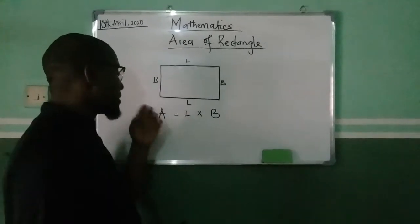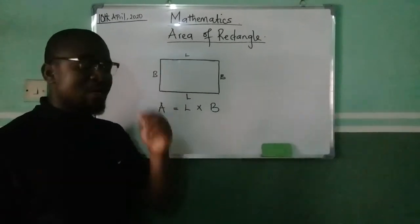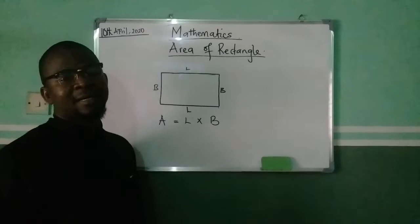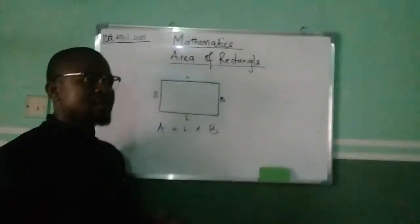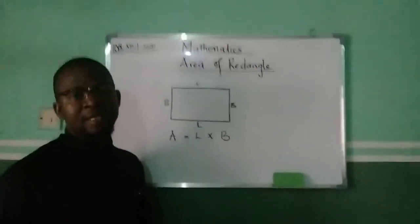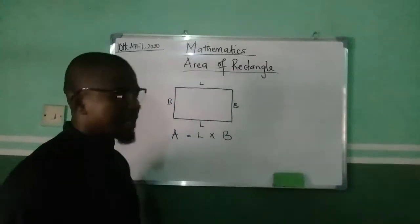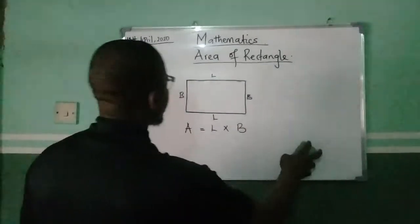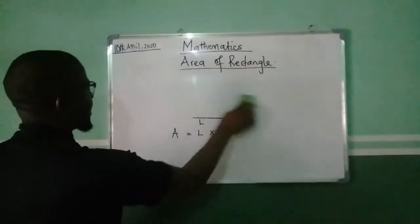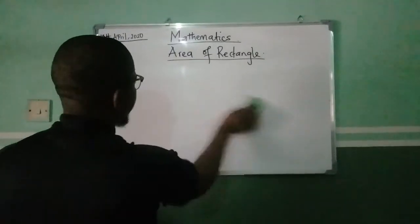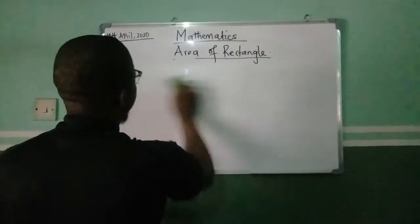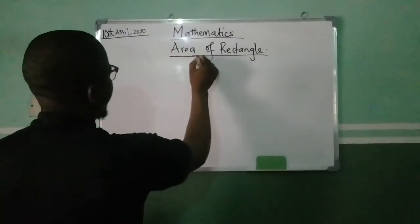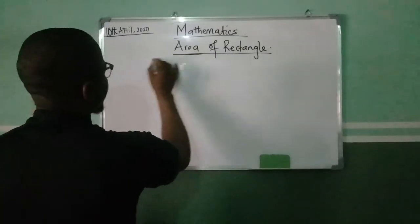The unit for area is centimeters squared or meters squared, as the case may be. We are going to be taking an example to see how we can get the area of a rectangle.